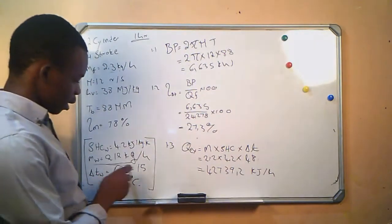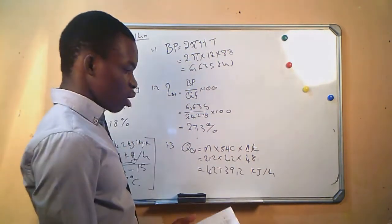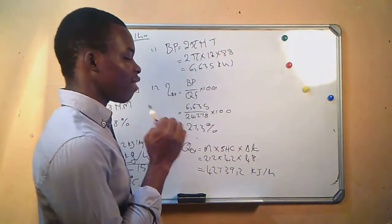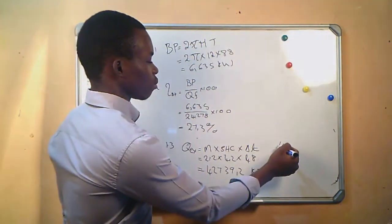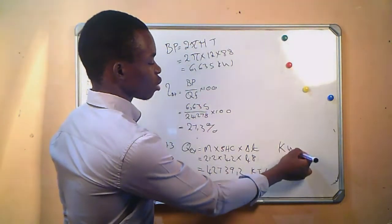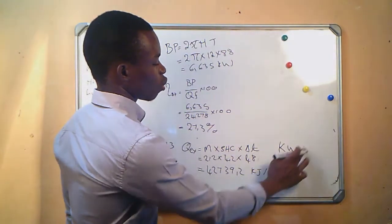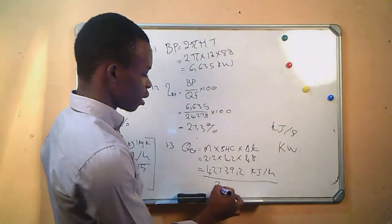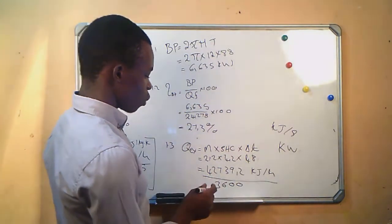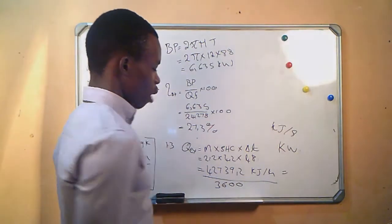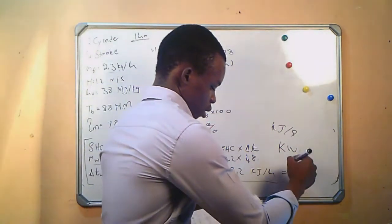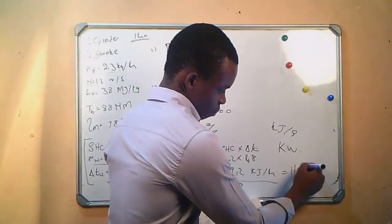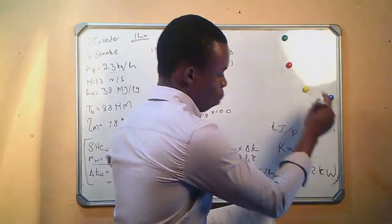The mass is in kg per hour, so the initial result is in kJ/hr. Since we need the answer in kilowatts (kJ/s), we divide by 3600. This gives us 11.872 kilowatts for the energy carried away by the exhaust gases.